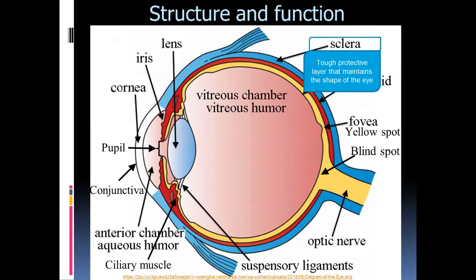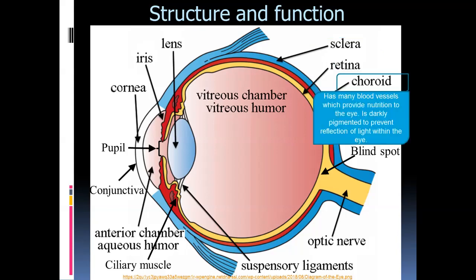The sclera is a tough outer layer that provides protection and helps maintain the shape of the eye. The choroid, the second layer, has many blood vessels within it that provide nutrition — nutrients and oxygen — to the eye. It is darkly pigmented, which prevents reflection of light within the eye, stopping light from bouncing around inside.